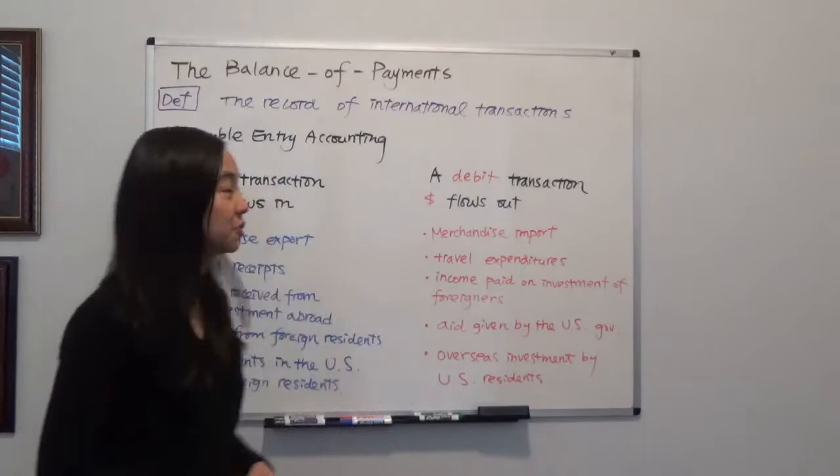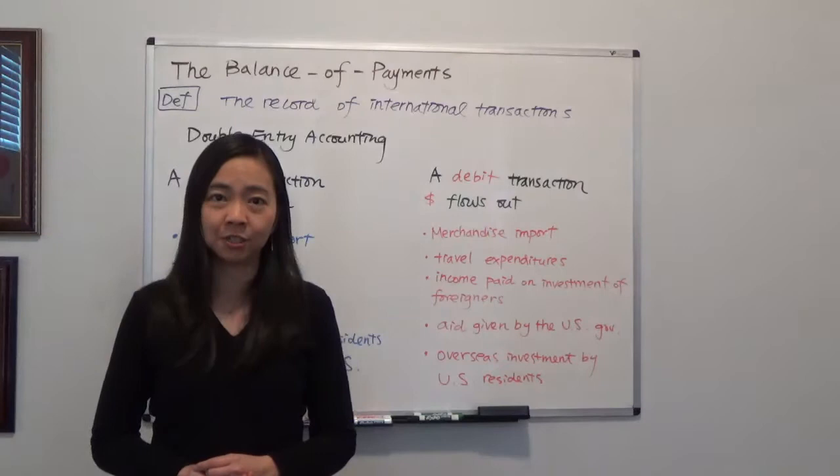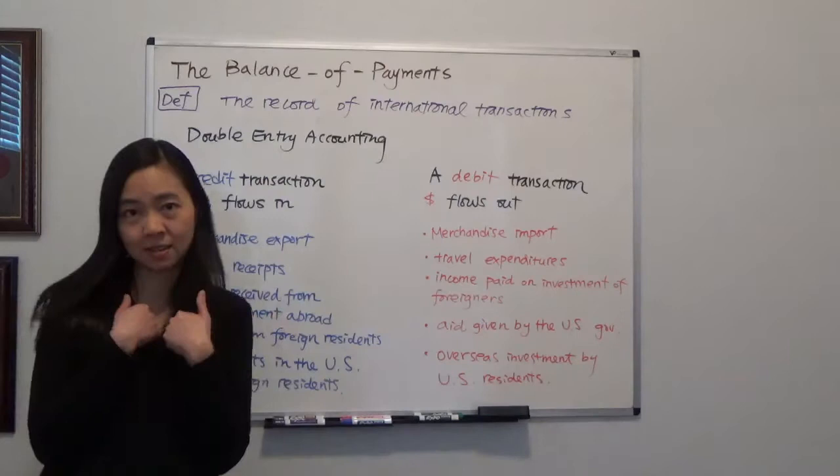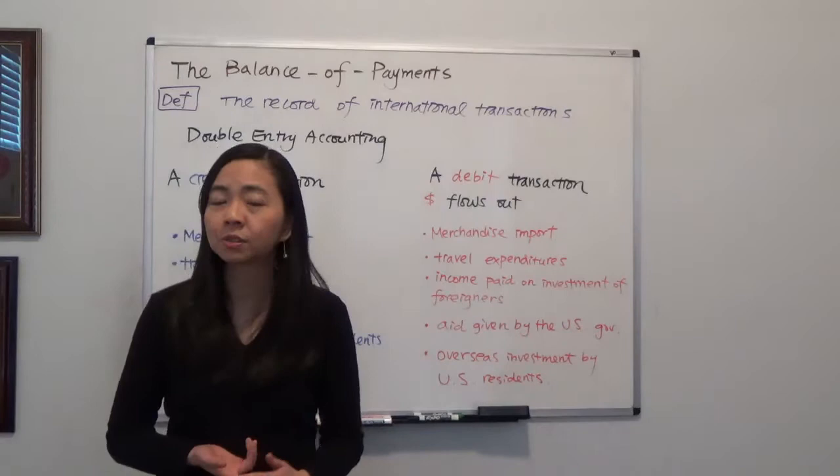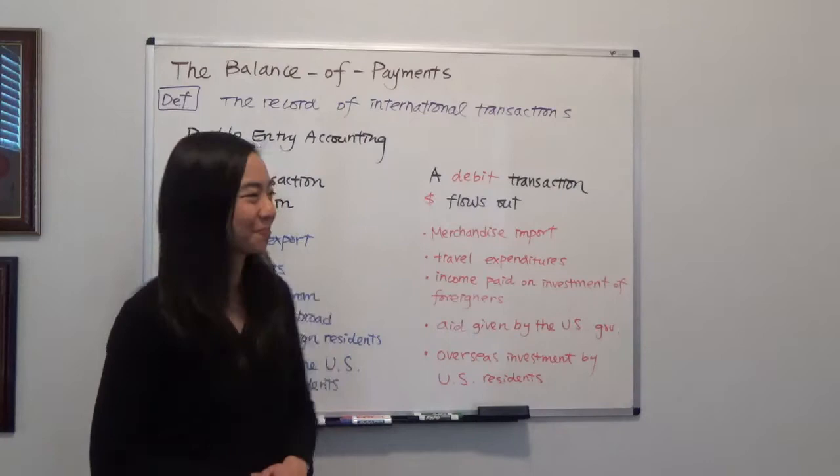The definition of the balance of payments is actually very simple. It's just a record of international transactions. Because we're US residents, the balance of payments for us will be a record of international transactions between US residents and the residents of the rest of the world. Residents can be either consumers, importers, exporters, banks, or even governments — say the central bank.